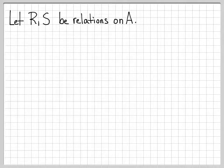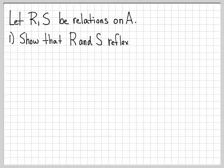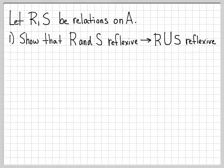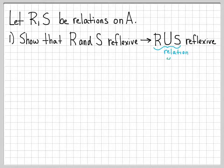We're going to do a few simple proofs related to the relations R and S, which are both relations on A. In the first part, we're going to show that when R and S are both reflexive, this implies that the relation R union S is also reflexive. R union S is just a new relation on A.